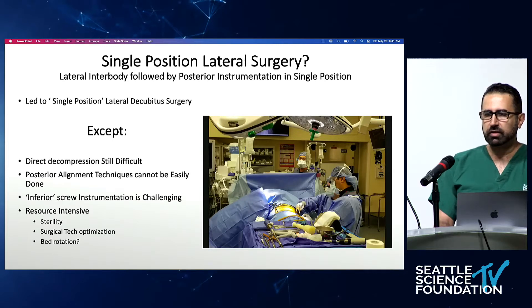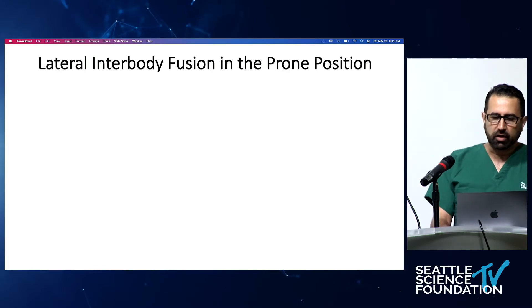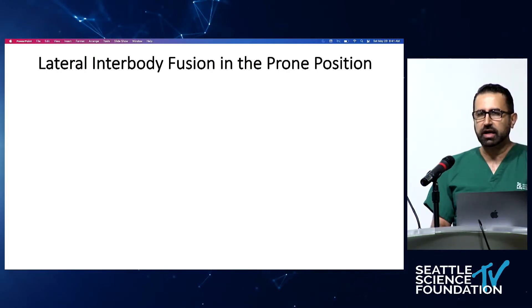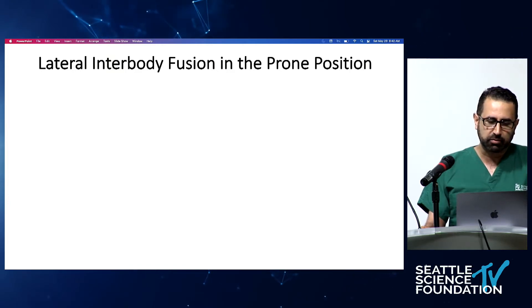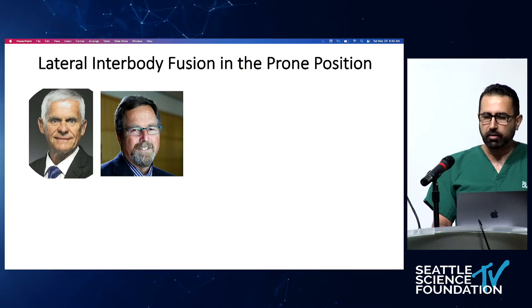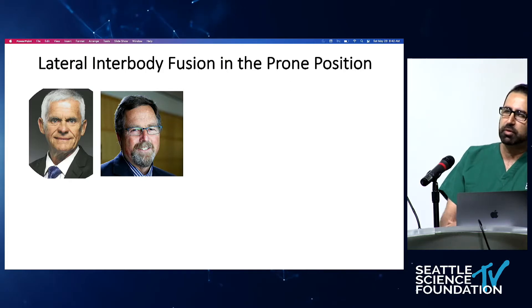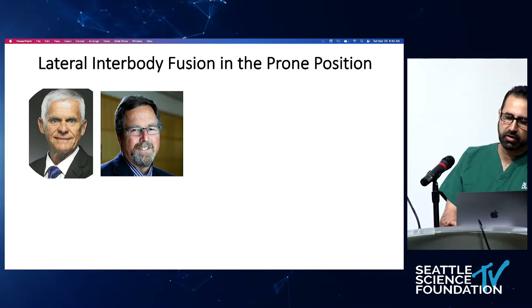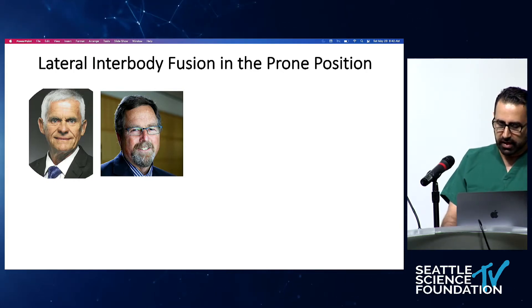Where do you position the patient relative to the posterior aspect of the bed to place instrumentation without collision? The anterior abdominal structures don't have the luxury of hanging free. There are sterility issues — where do you place the surgical technician? If you rotate the bed you risk losing traction with the tape and losing optimal position. All of this led to the concept of lateral interbody fusion in the prone position, which has been discussed before.